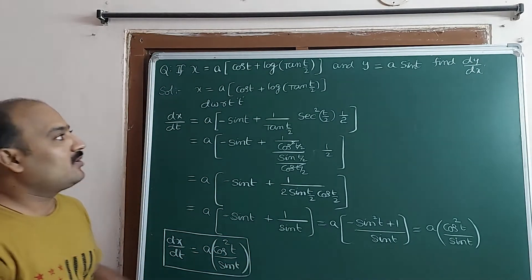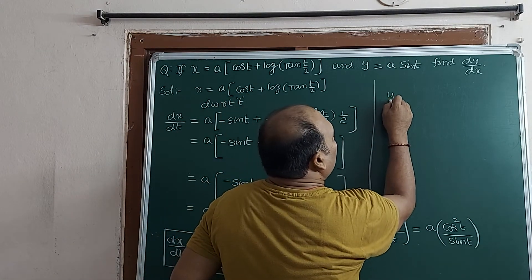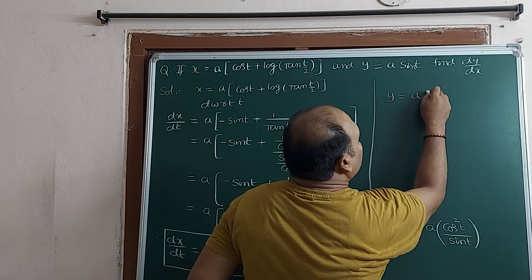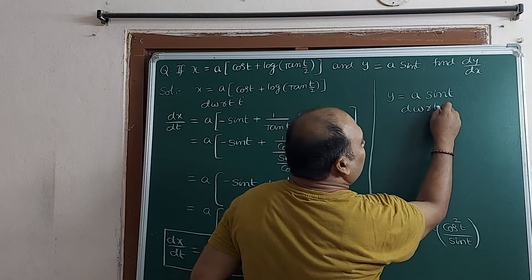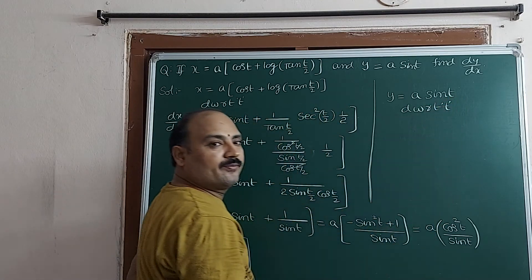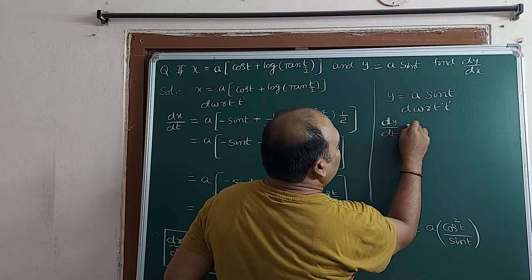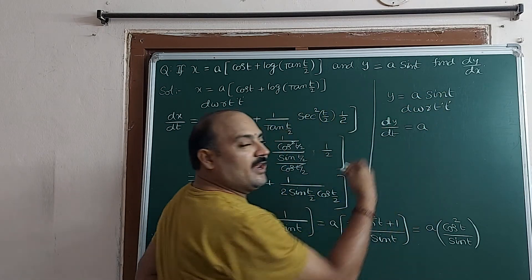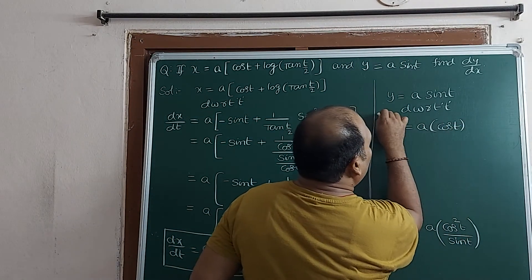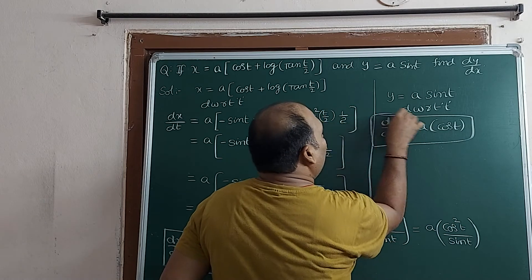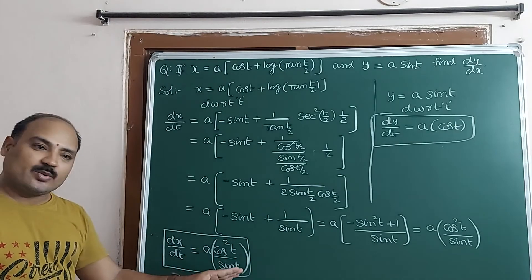Next, the y value is given: y = a·sin t. Differentiating with respect to t, dy/dt = a times d/dt of sin t = a·cos t. So dy/dt = a·cos t.